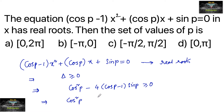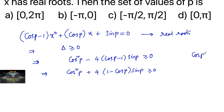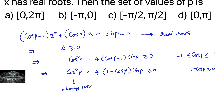This can be rewritten as cos²p + 4(1 - cos p)(sin p) ≥ 0. Since we know the range of cos p lies between -1 and +1, that implies (1 - cos p) ≥ 0. So we can say cos²p is always positive or zero, and (1 - cos p) is also greater than or equal to 0.